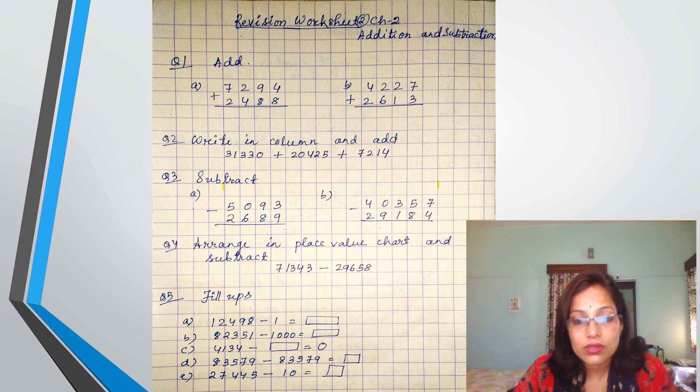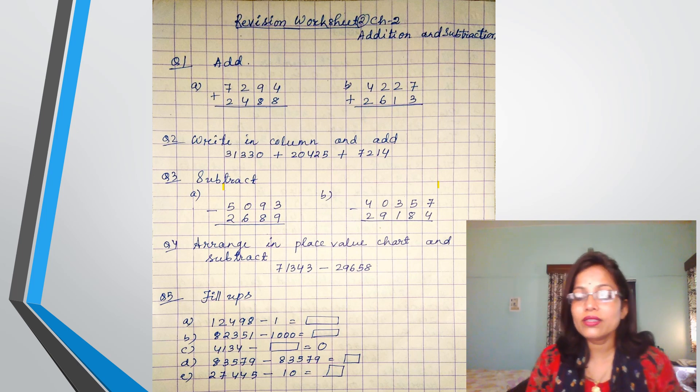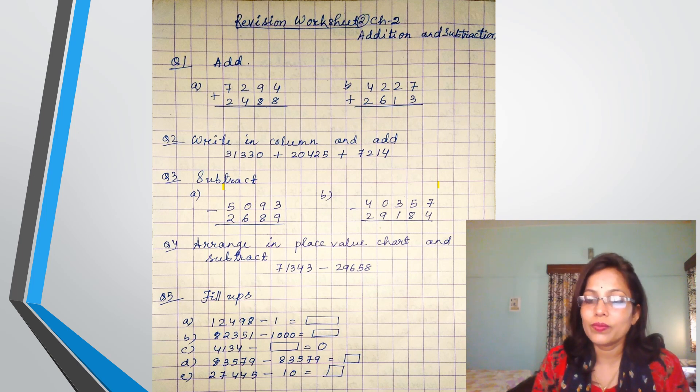4 minus 4 will be 0, 5 minus 5 will be 0. Same way, 4,134 minus blank is equal to 0, so write the answer. Then 83,579 minus 83,579 is equal to blank. Now only I discussed the same number, we are subtracting the number. Then what will be the answer? You write there.